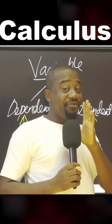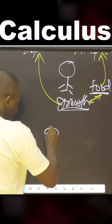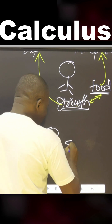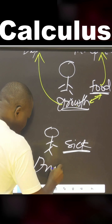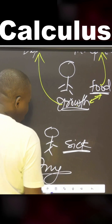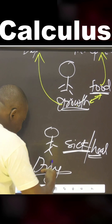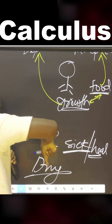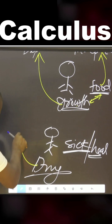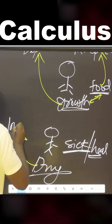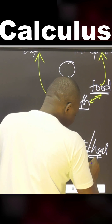Now let's check another example. This is a man who is sick — he has some ailment. You administer a drug to this man. Does the drug depend on the healing, or does the healing depend on the drug? The healing depends on the drug — therefore the drug is the independent variable and the healing is the dependent variable.